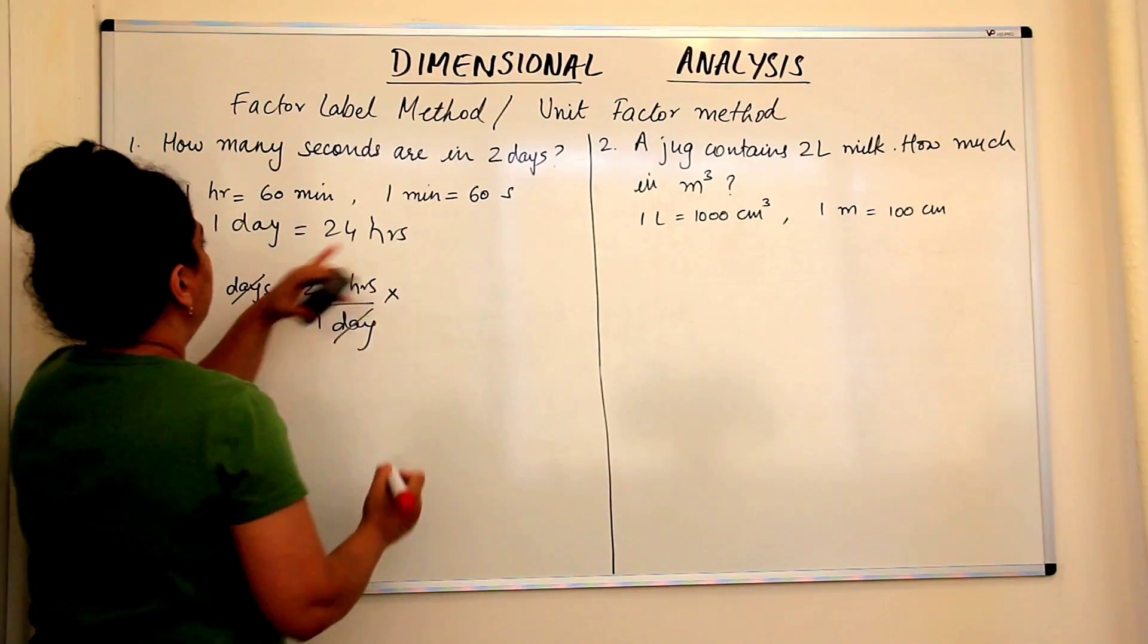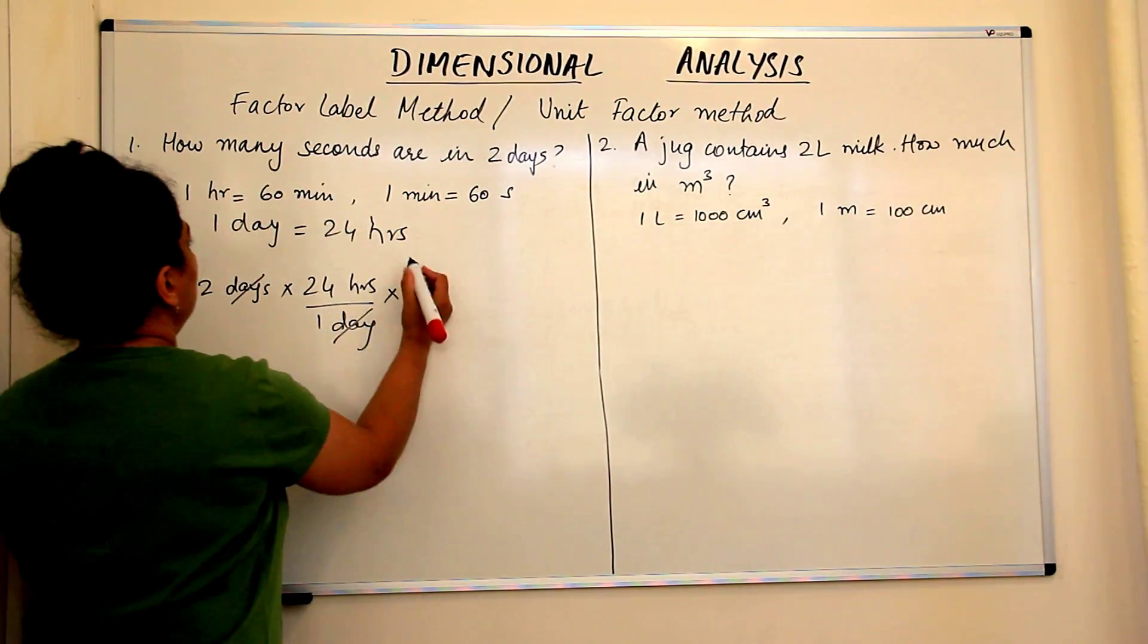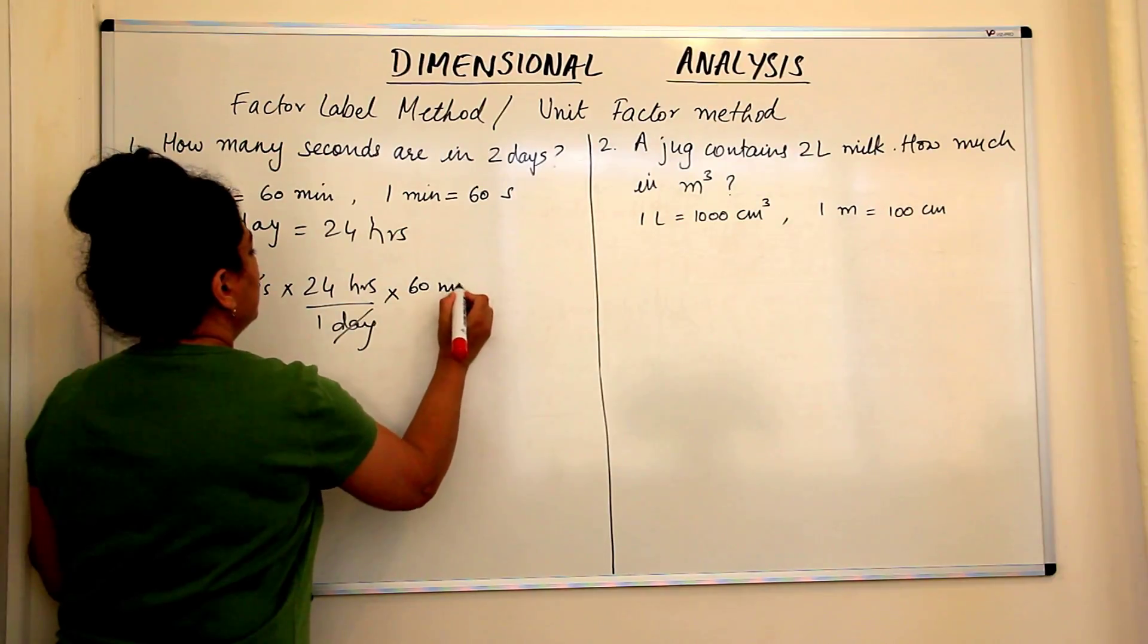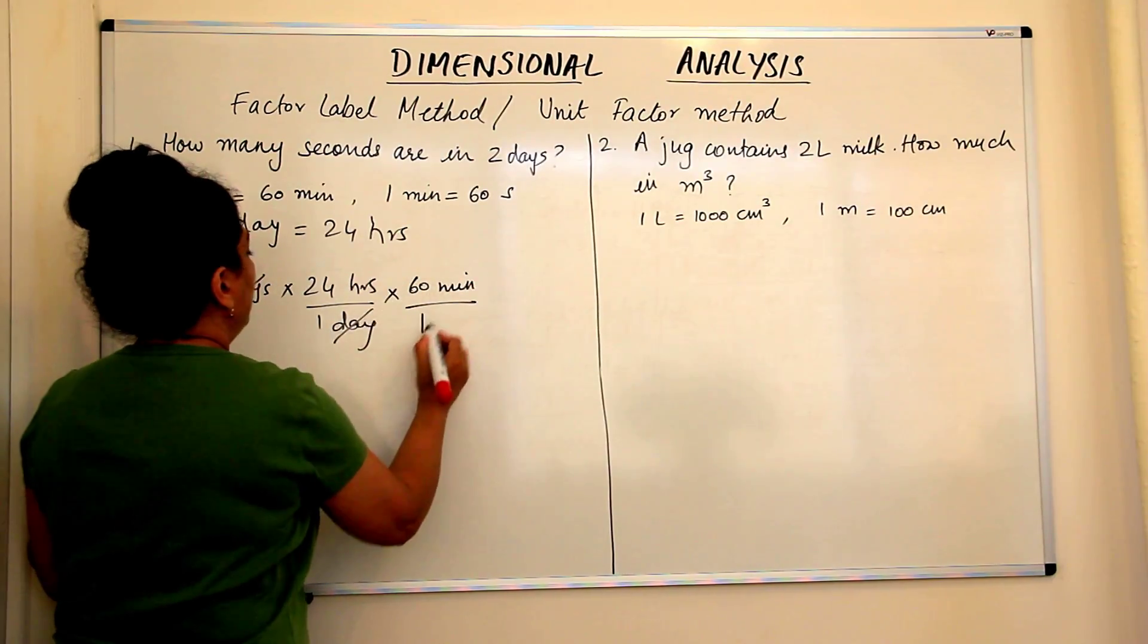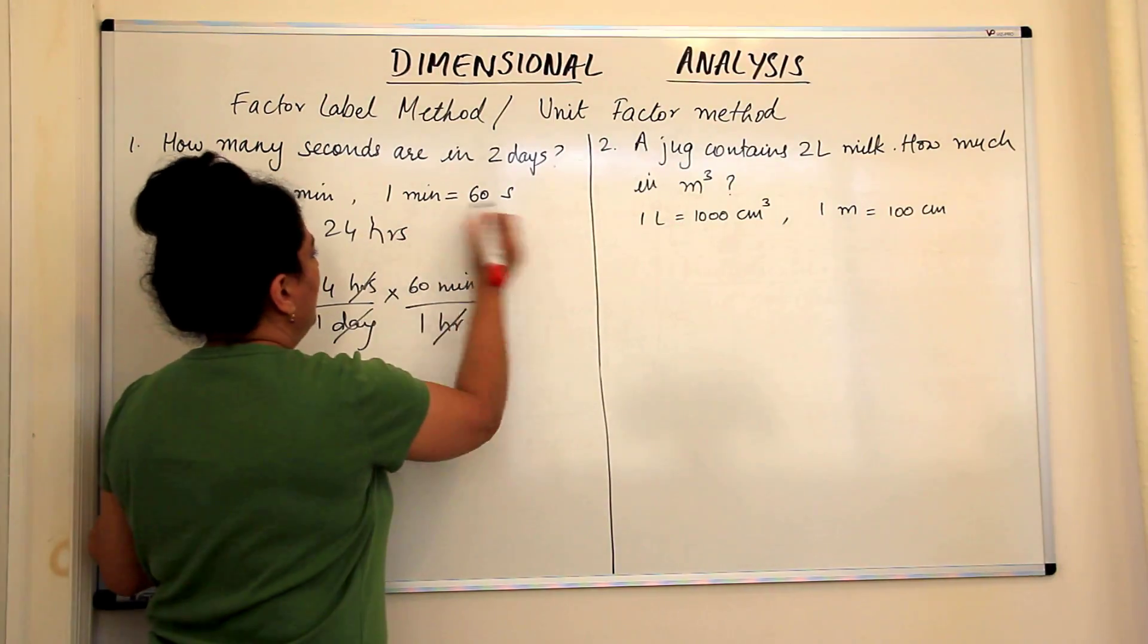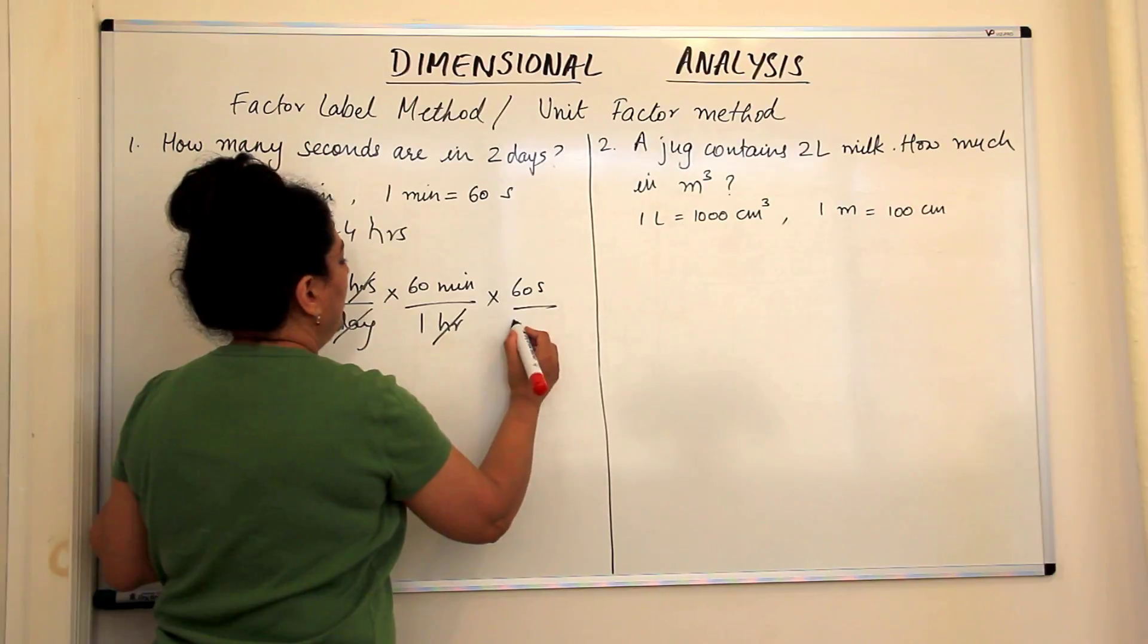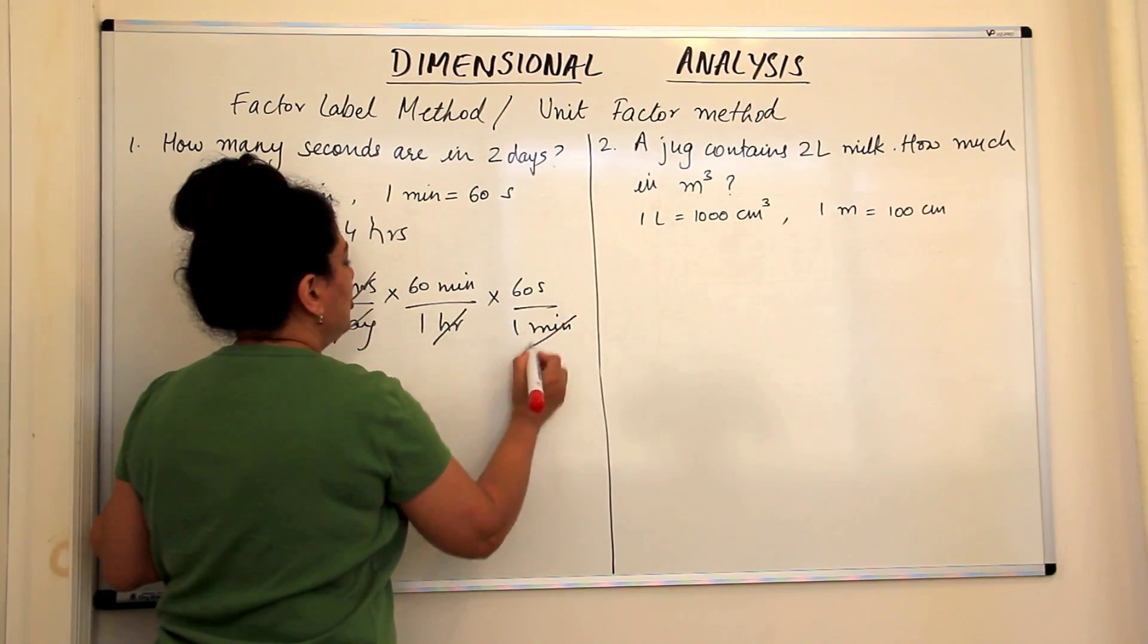Cancel out the unit. So now we have hours. In the next step we should have hours in the denominator. So we use this relationship. It would be 60 minutes upon one hour. The hour gets cancelled. We want seconds in the numerator now. So 60 seconds upon one minute. We want the minute to be cancelled out.